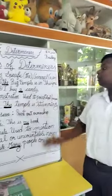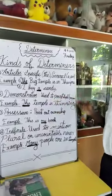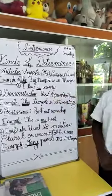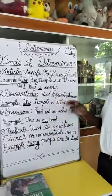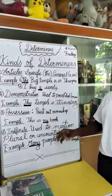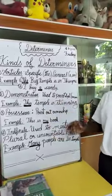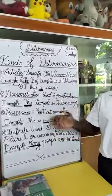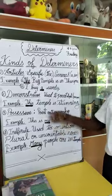Next, demonstrative. Demonstrative is used to point out an object or person. For example, 'this temple is standing'. Here, I have told 'this temple' — I am specifically telling this temple.